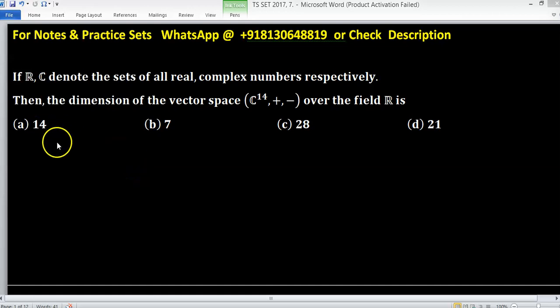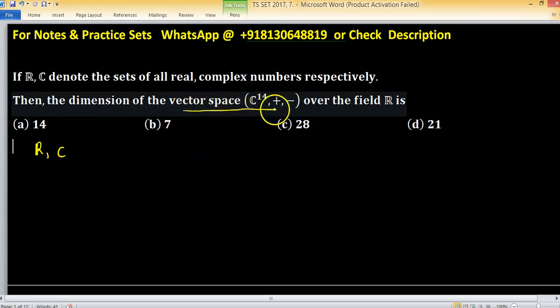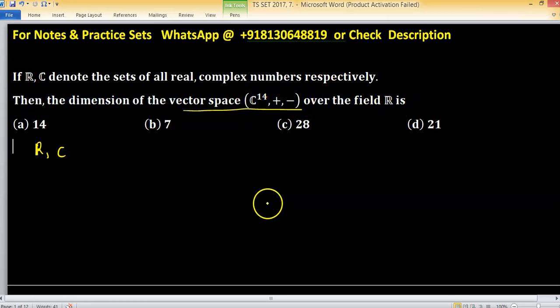In this given problem, R and C denote the standard sets of real numbers and complex numbers respectively. We have to find the dimension of the vector space C^14 with addition and subtraction over the field of real numbers R.